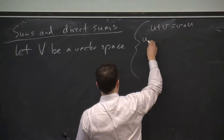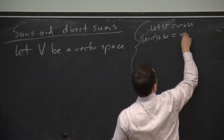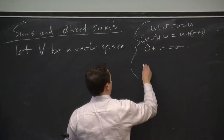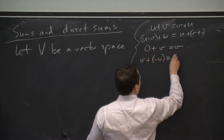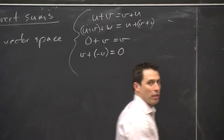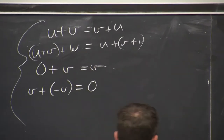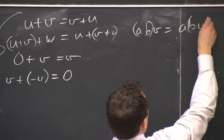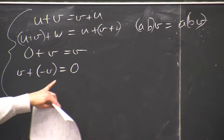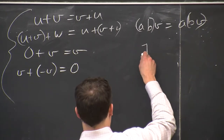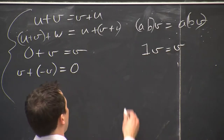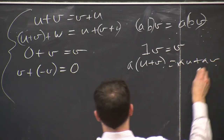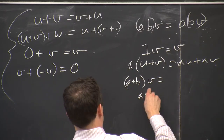We want addition in this space to be defined and commutative, to be associative. We want an identity and an additive inverse. Those are the additive abelian group axioms. Over here are the ones that describe the field action. This one we also call an associative property — it doesn't matter if I multiply first in the field and then apply the action, or apply the action twice. It also has an identity requirement that 1 times V equals V, and two distributive requirements: A times (U plus V) equals AU plus AV, and (A plus B)V equals AV plus BV.